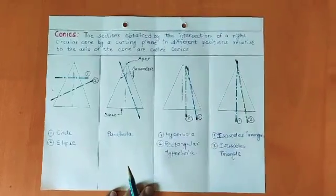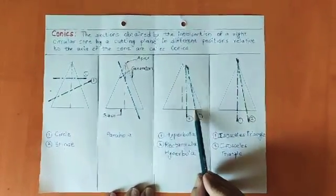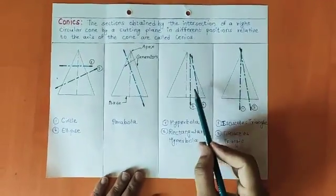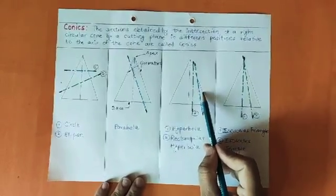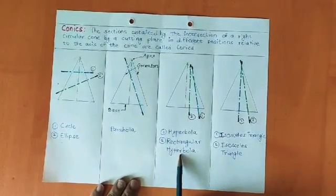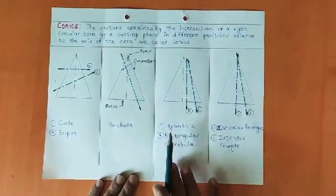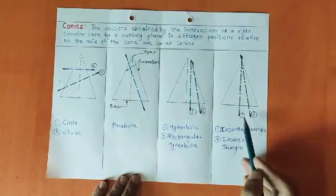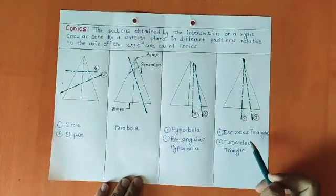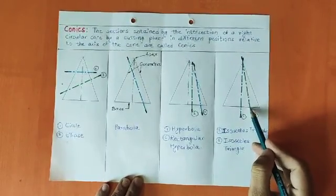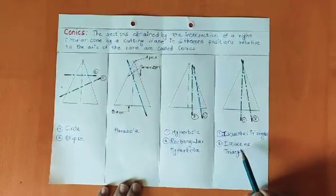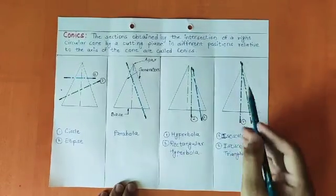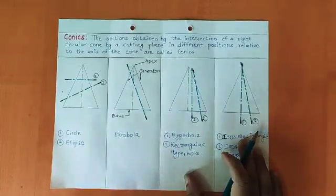Case number three: if the cutting plane is passing through the base and one of the generators, the shape you get will be a hyperbola. A particular case of this: if the cutting plane cuts the base and generator but is parallel to the axis of the cone, the curve you get is a rectangular hyperbola. Finally, if the cutting plane passes through the apex and the base, you get an isosceles triangle. For the particular case where the base equals the height of the cone and we cut at the axis, we get an equilateral triangle.